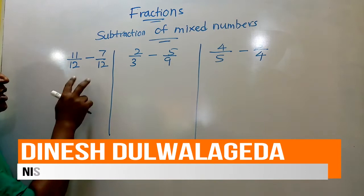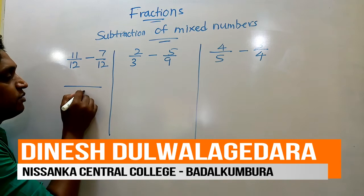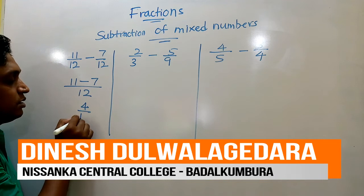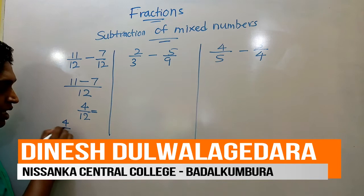First I use the proper fraction to subtract. Our first example, here we can see when you subtract this, the denominators are equal. So when denominators are equal it is easier. So 11 subtract 7, answer is 4 over 12.